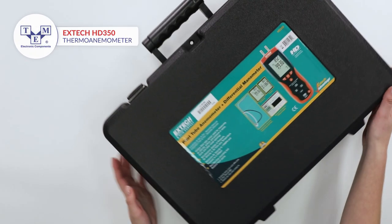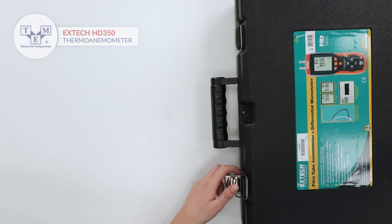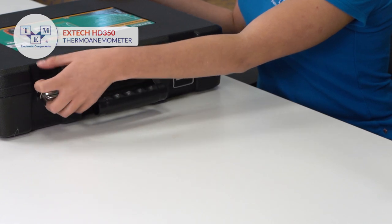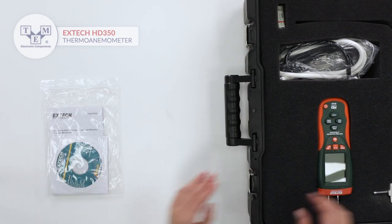The EXTECH HD350 is a pitot tube anemometer and differential manometer. It measures differential pressure in five selectable units of measure, as well as air velocity and airflow.